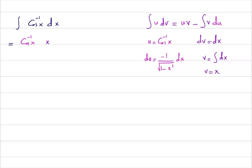Minus the integral of v du. v is equal to x and du is negative 1 divided by square root of 1 minus x squared dx.